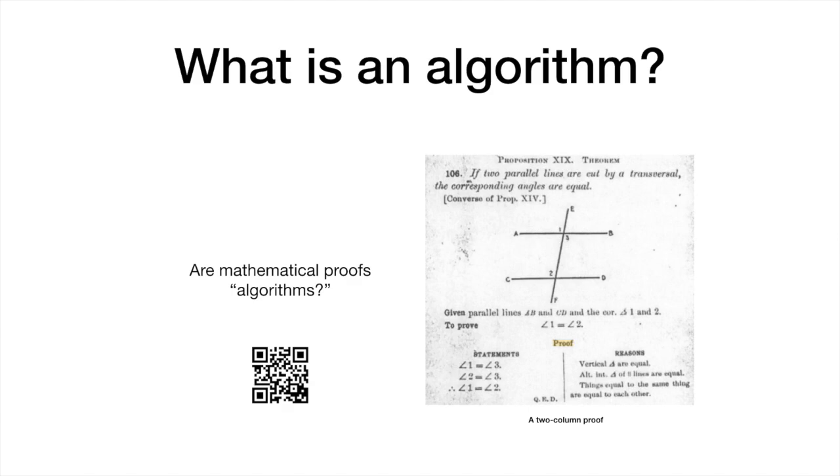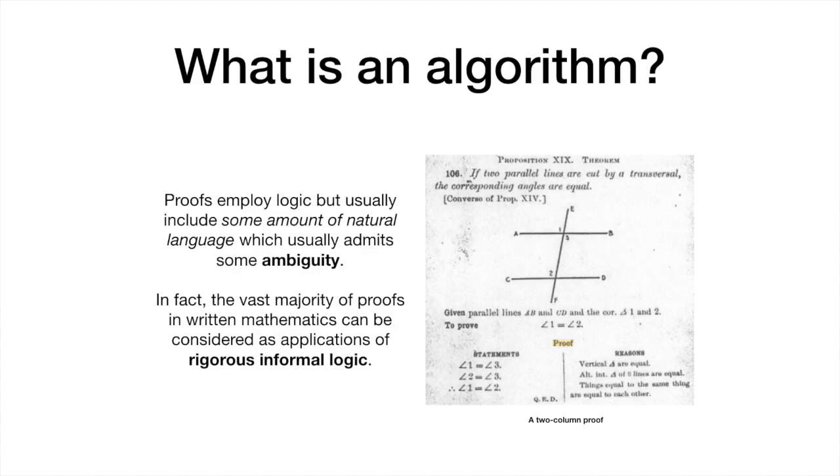Are mathematical proofs algorithms? Or algorithms something different? Both algorithms and proofs employ logic, but proofs usually include some amount of natural language and admit some degree of ambiguity. In fact, most mathematical proofs can be considered applications of rigorous informal logic.